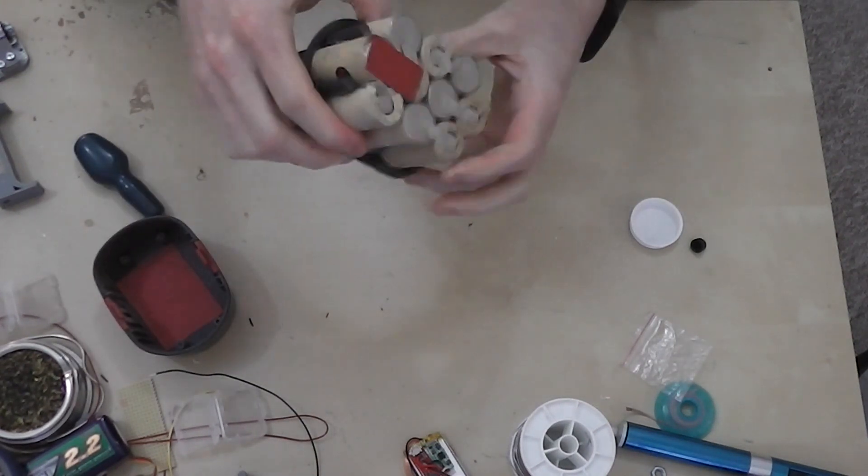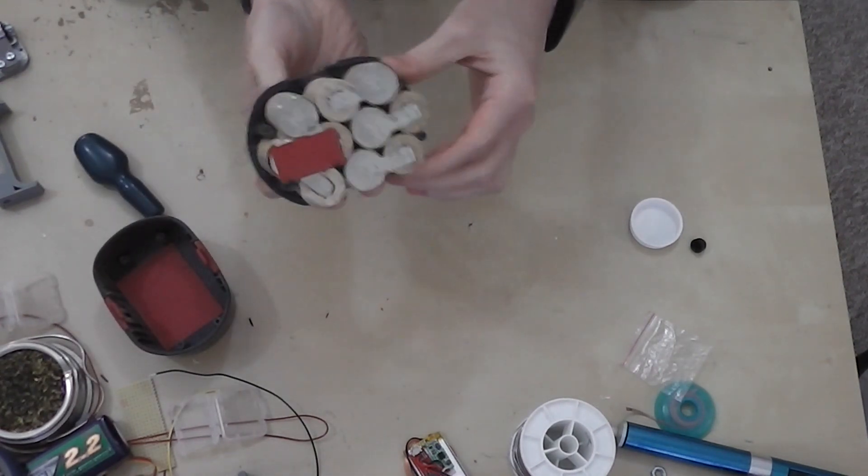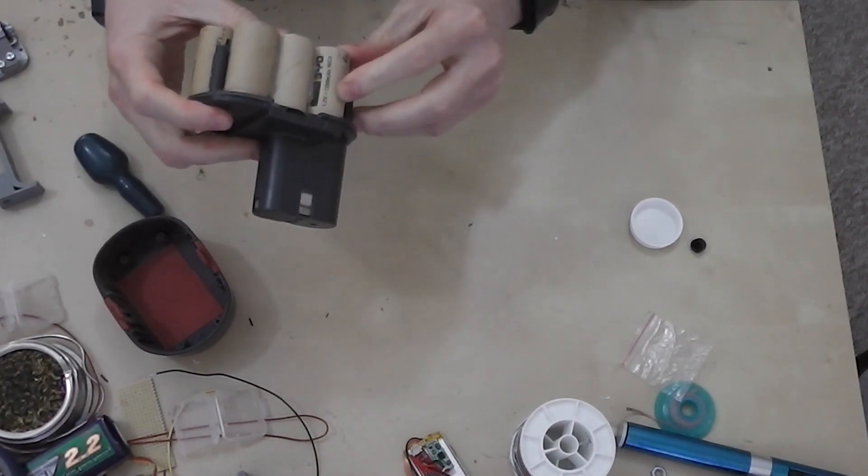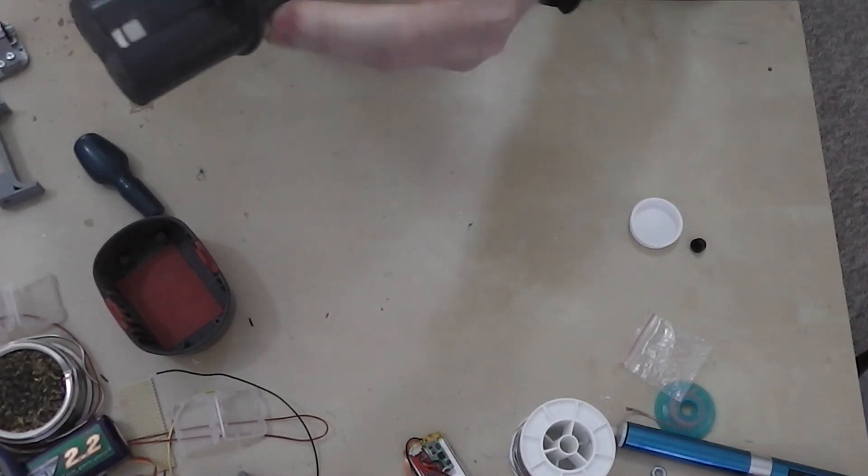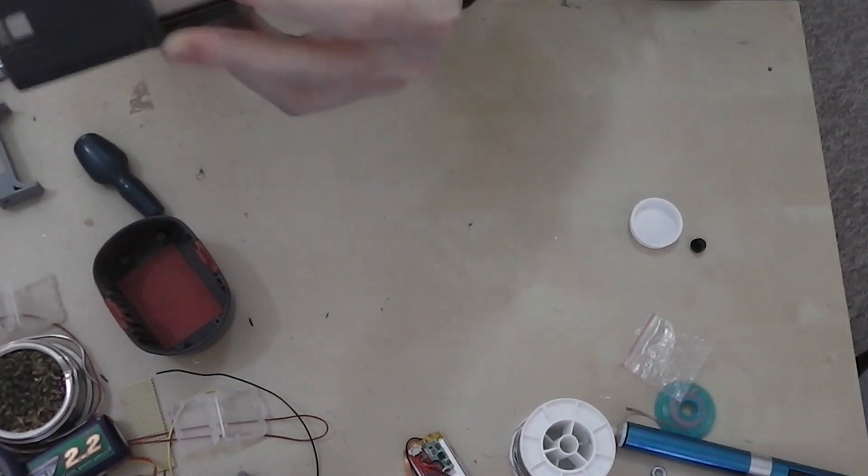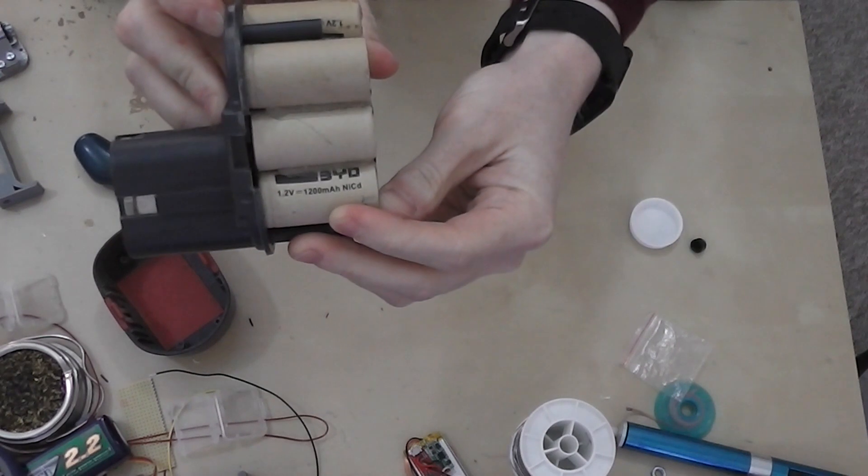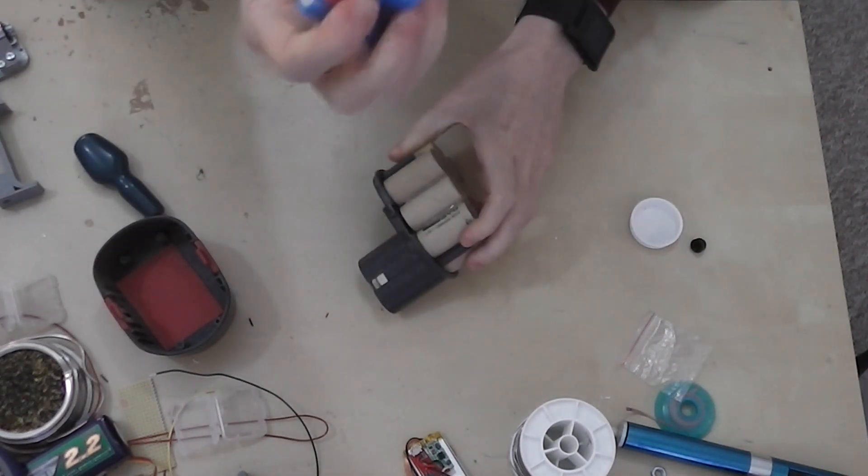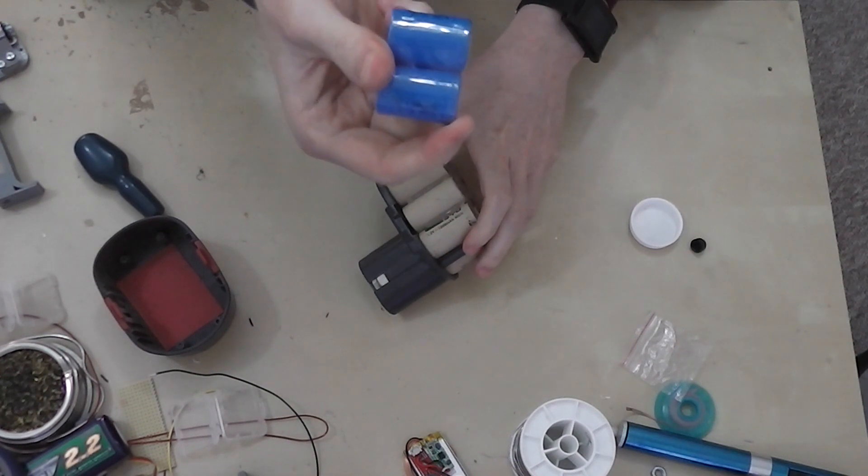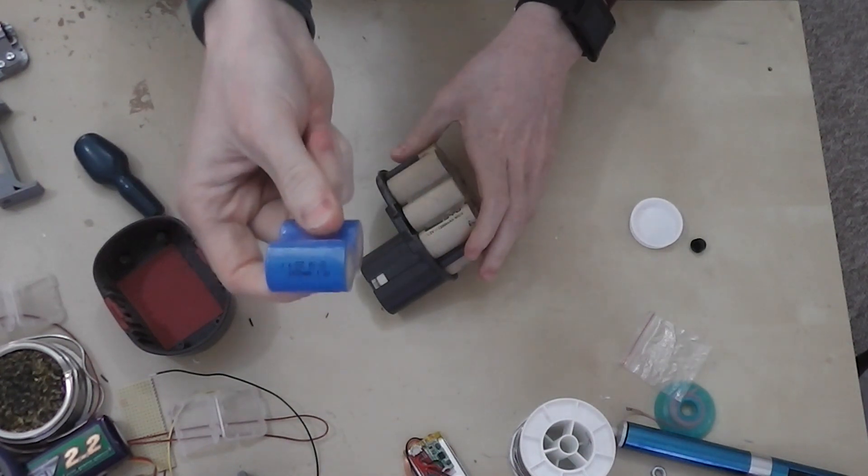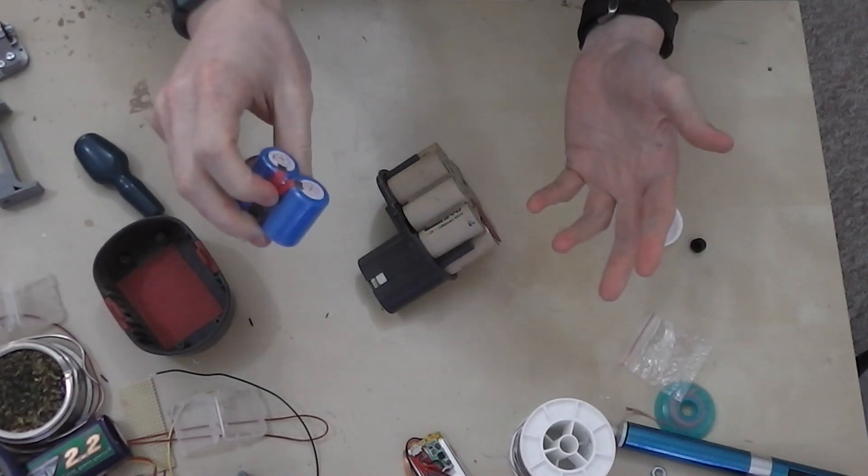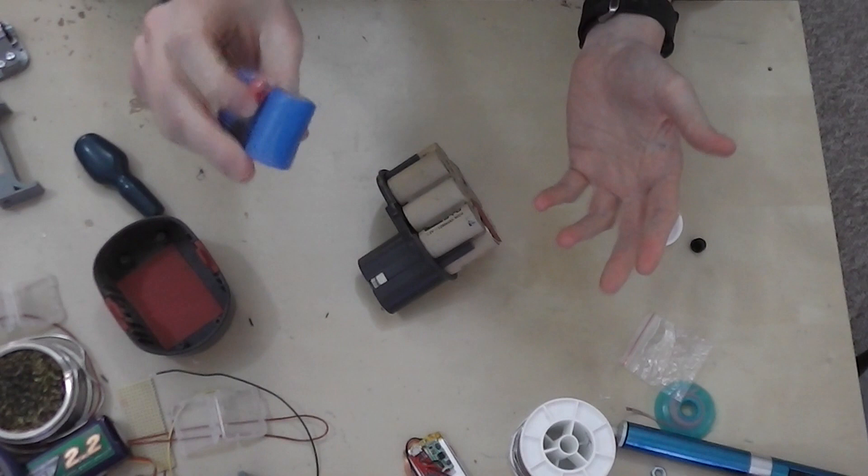Inside you can see we've got a large number of paper-wrapped cheap packs. Each cell is rated at 1.2 volts and 1200 milliamp hours. The new cells I picked up are obviously the same voltage but they are 1600 milliamp hours, so it's a little bit more. Hopefully it's not so much more that it will impact the charging system that works with it.